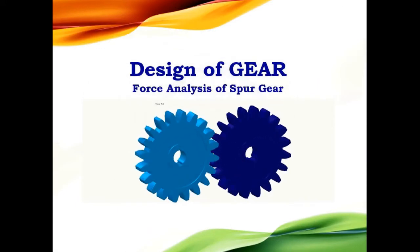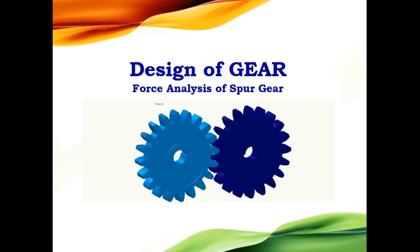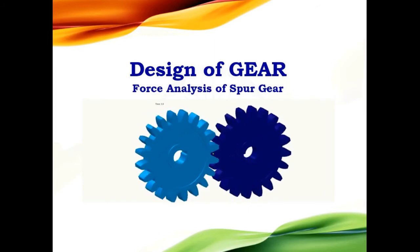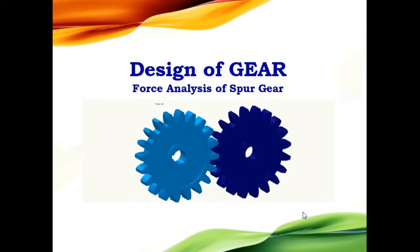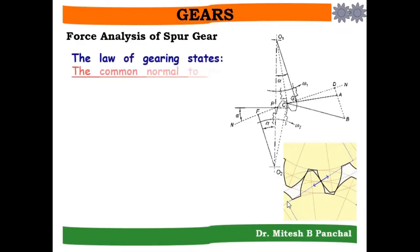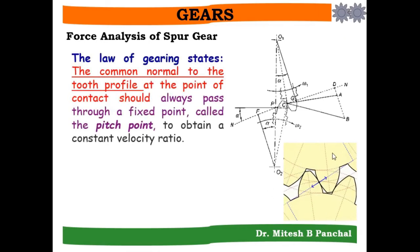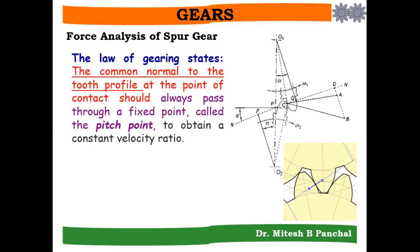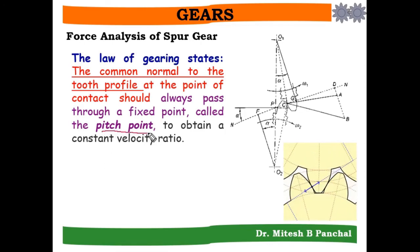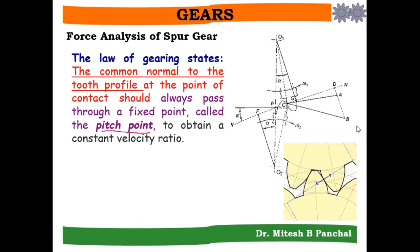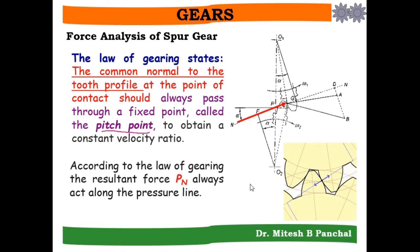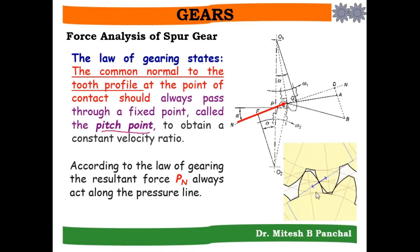Dear students, in this particular session of design of gear, we will go through force analysis of spur gear. The law of gearing states that the common normal to the tooth profile at the point of contact should always pass through a fixed point called the pitch point, to obtain a constant velocity ratio. According to the law of gearing, the resultant force Pn always acts along the pressure line.